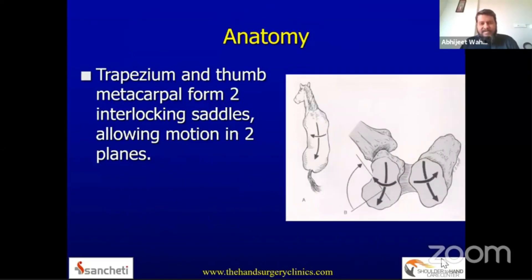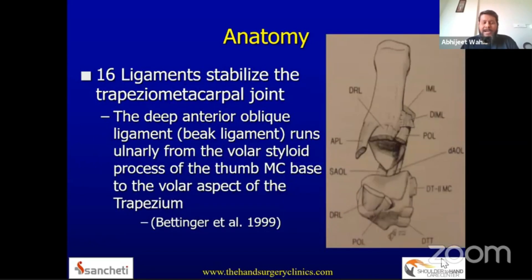The first CMC joint — that is, the base of the first metacarpal and the trapezium — has very peculiar anatomy. It has been likened to that of a saddle and the back of a horse, and these two interlocking saddles allow movement in two planes. The first metacarpal carpometacarpal joint allows for a very wide arc of movement because of the articular surfaces and the ligaments that stabilize the first metacarpal onto the trapezium.